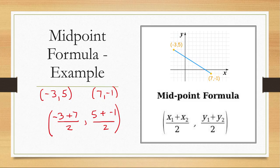Now we'll simplify. So -3 plus 7 is going to give me 4 over 2. And 5 plus -1 is also going to give me 4 over 2. When we reduce our fractions, 4 divided by 2 is 2. And so our midpoint should be the point (2, 2).